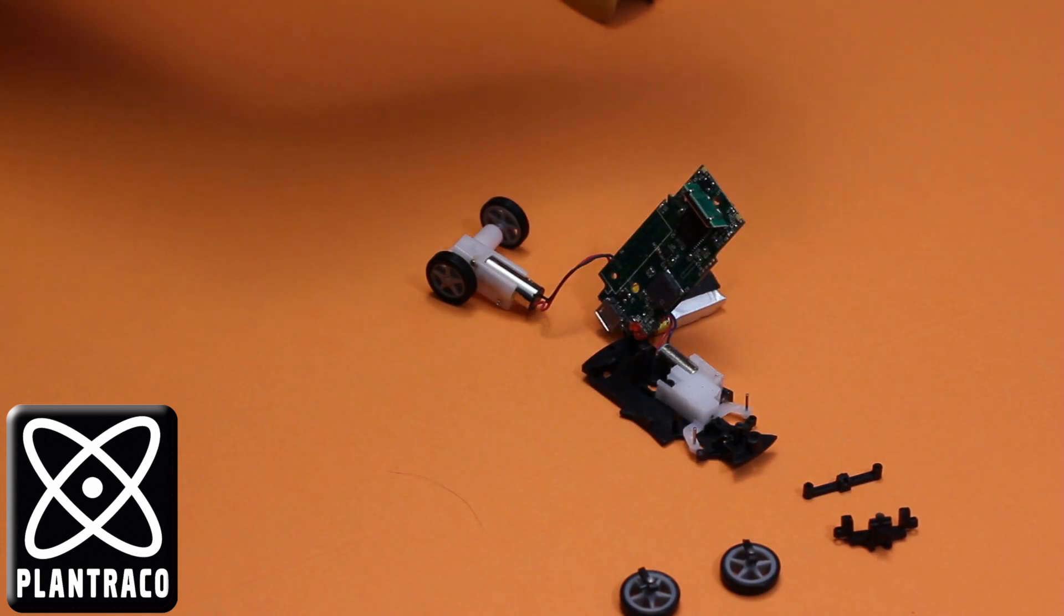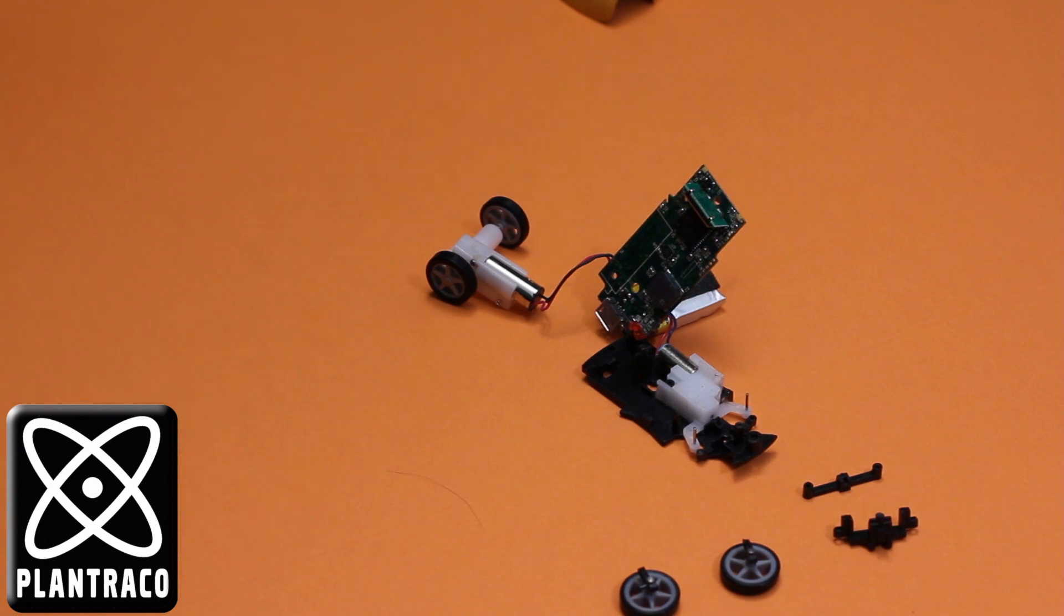And that's all there's to it to getting the wheels off. The next step I'll show you how to replace the steering knuckles and the wheel pins.